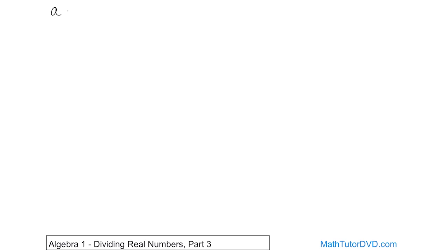So here we're given that a is equal to negative 3, b is equal to negative 1, c is equal to 2, and d is equal to 6.